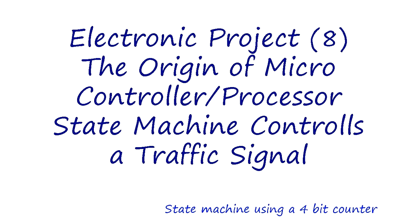Electronic Project 8: The Origin of Microcontroller/Processor. State machine controls a traffic signal. Here we learn how to make a traffic signal control unit using a state machine, and state machine is the origin of microcontroller and microprocessor.